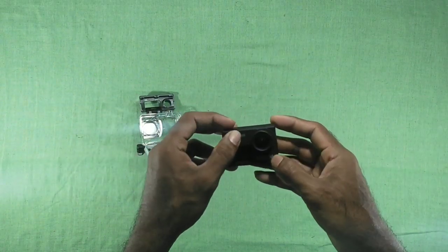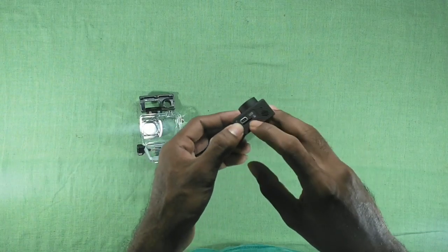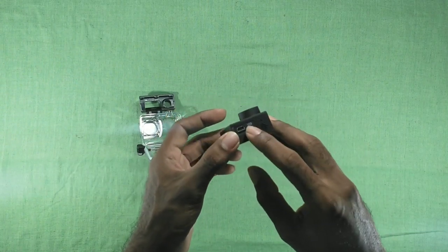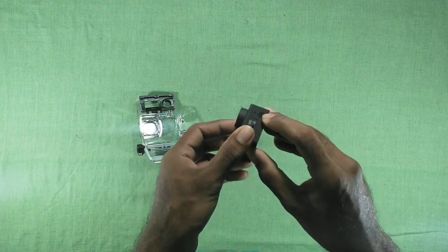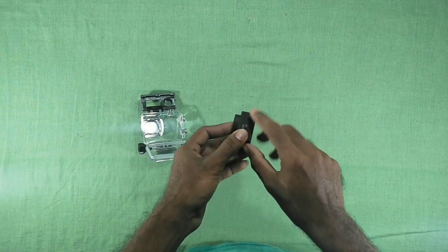From the outside, it's having an SJCAM branding and the model number written on it. On the left-hand side, we've got the micro USB charging port and also the micro SD card port. The best part of this camera is it's having an internal mic built into it.